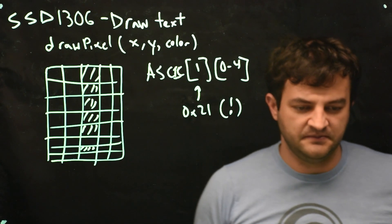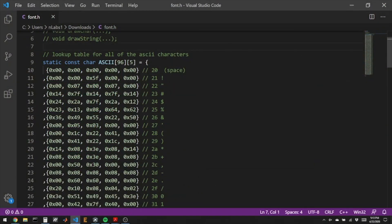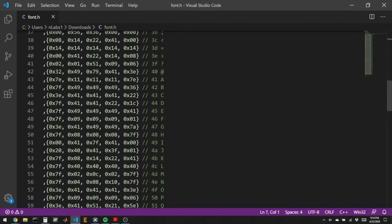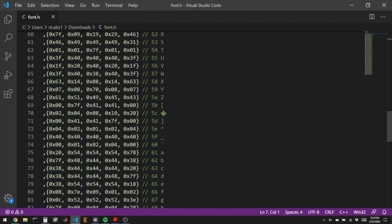So in the ASCII table, I've got every drawable character, a bitmap that will draw it out as a 5 by 8.